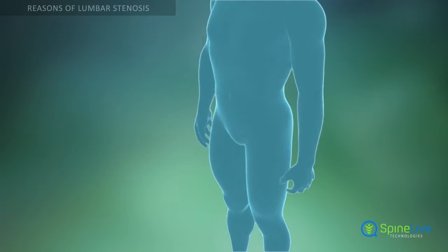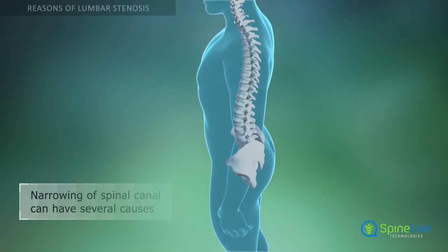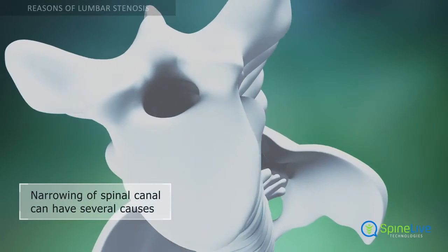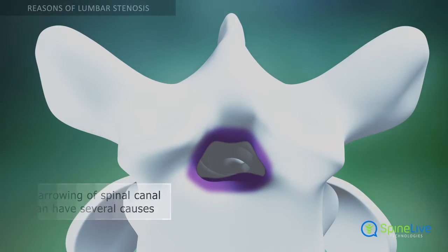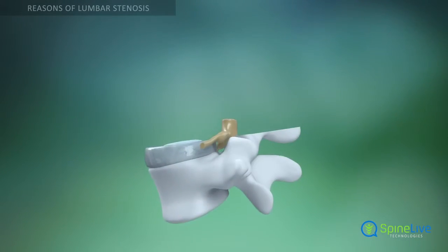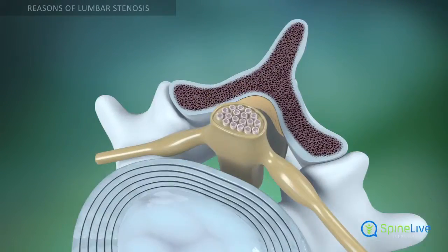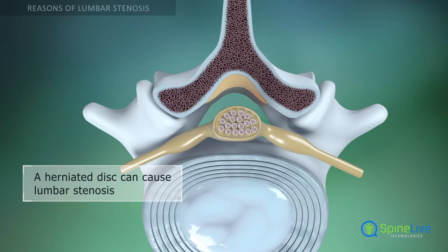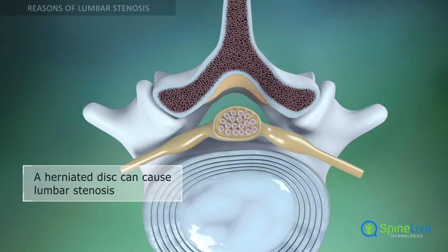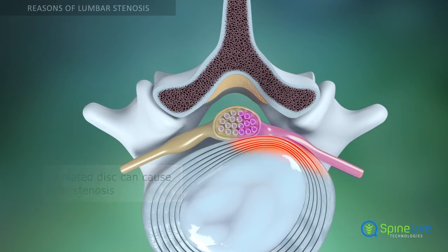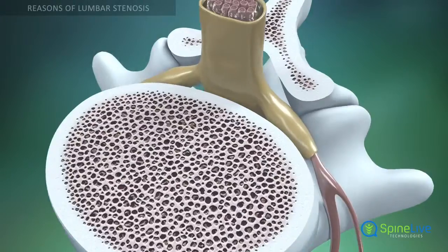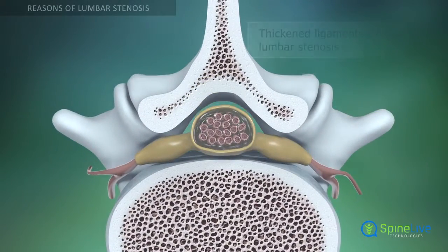Lumbar stenosis is narrowing of the spinal canal; it may occur for several different reasons. One of the most prevalent causes of lumbar stenosis is a disc hernia. A herniated disc can put pressure on the spinal cord or its nerves and cause symptoms of lumbar spinal stenosis.